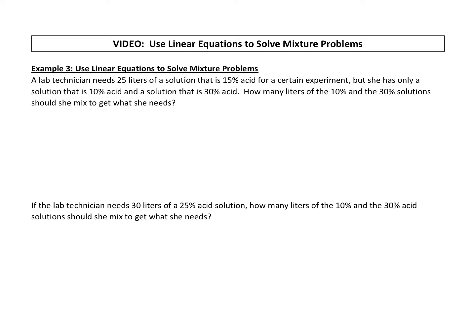Here we go. A lab technician needs 25 liters of a solution that is 15% acid for a certain experiment, but she has only a solution that is 10% acid and a solution that is 30% acid. How many liters of the 10% and the 30% solution should she mix to get what she needs?